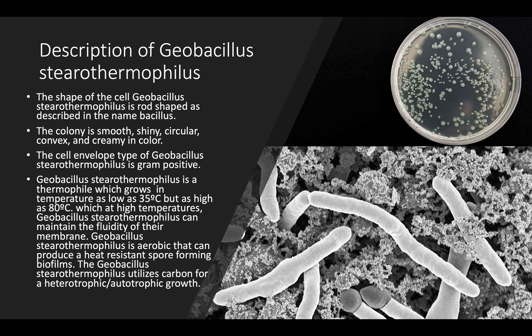The temperature of growth for Geobacillus stearothermophilus can go as low as 35 degrees Celsius and as high as 80 degrees Celsius. When the temperatures hit 80 degrees Celsius, the membrane can maintain its fluidity. It is also described as being aerobic, meaning that it can produce a heat-resistant spore which further produces a biofilm. Geobacillus stearothermophilus also utilizes carbon for growth and can further grow into a heterotrophic or autotrophic growth.